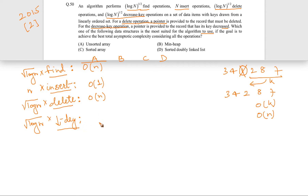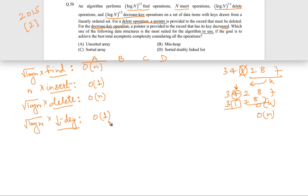For decrease-key in an unsorted array: since the pointer is already provided, we simply go to that record and decrease the value. No shifting is needed — for example, changing 4 to 1 in [3, 4, 1, 2, 8, 7] just gives [3, 1, 1, 2, 8, 7]. Since nothing else changes, decrease-key takes O(1) constant time.